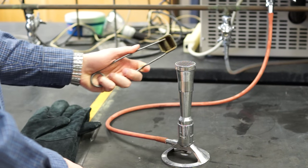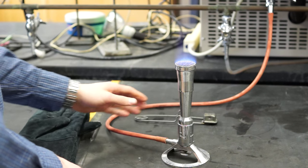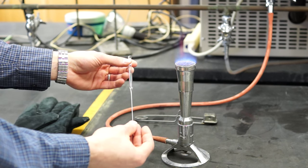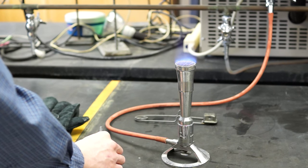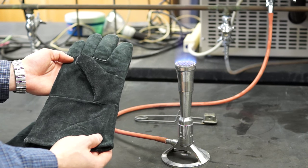Next, we're going to turn on the gas and light the flame using the striker. We're going to be heating a pasture pipette, so you may want to use gloves to protect your hands from the flame, if you so choose.